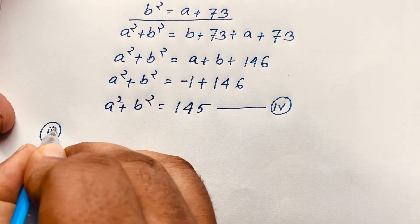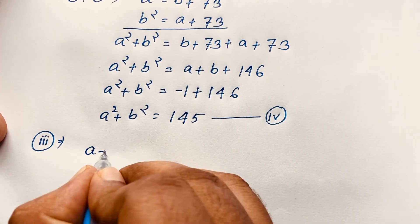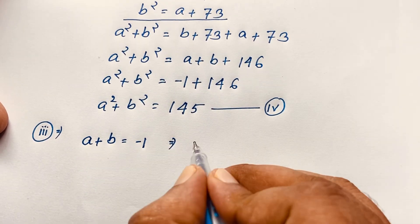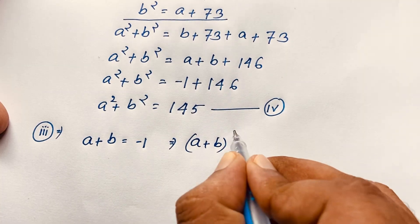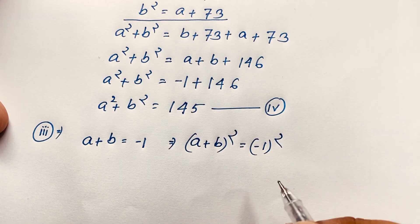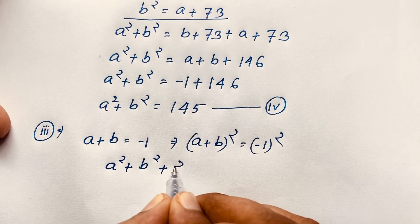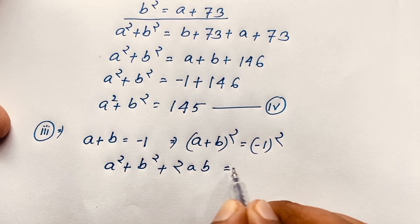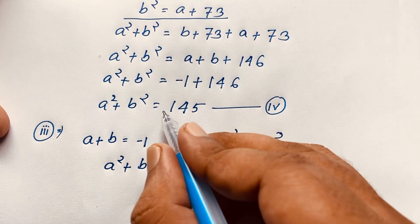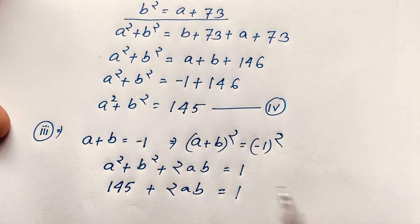Recalling our third equation, a plus b equals negative one, substituting into the fourth equation: a squared plus b squared equals negative one plus 146 equals 145. Now squaring both sides of a plus b equals negative one, we get a squared plus b squared plus 2ab equals positive one.